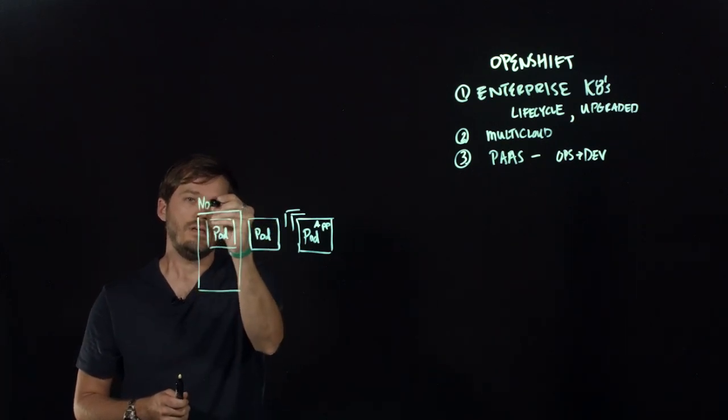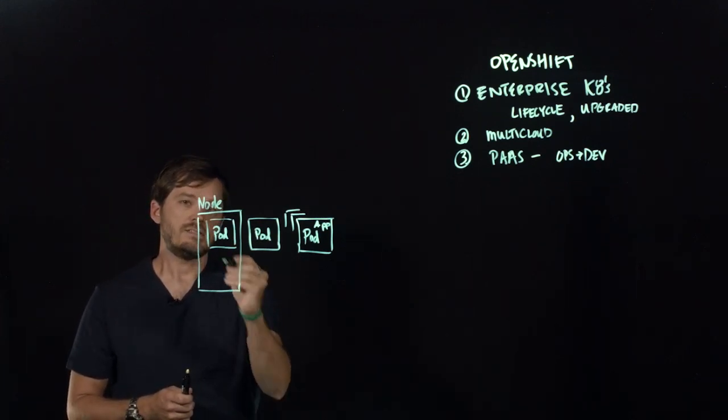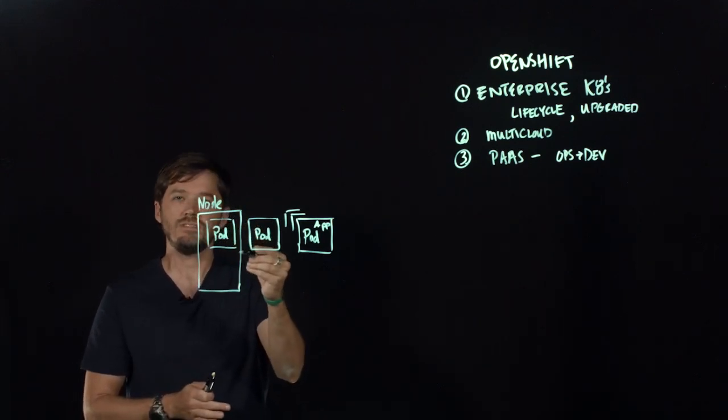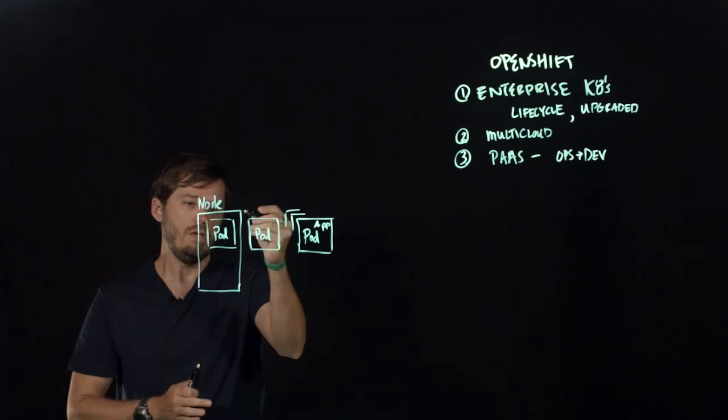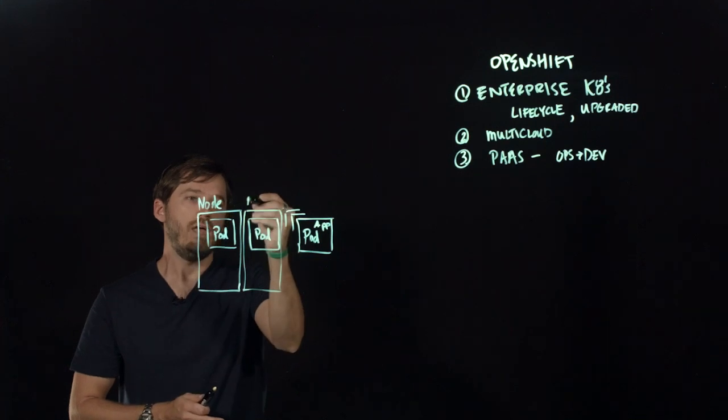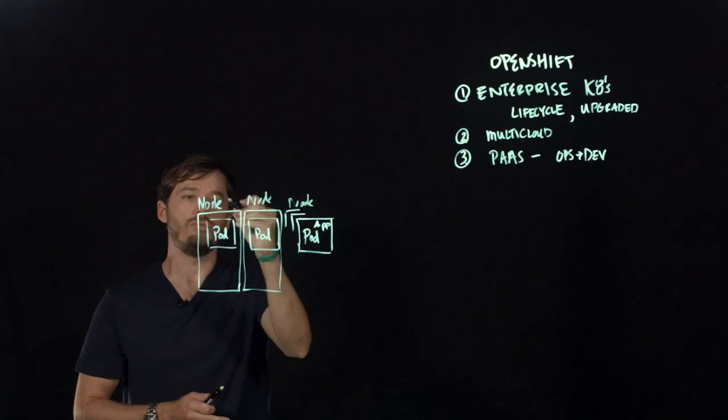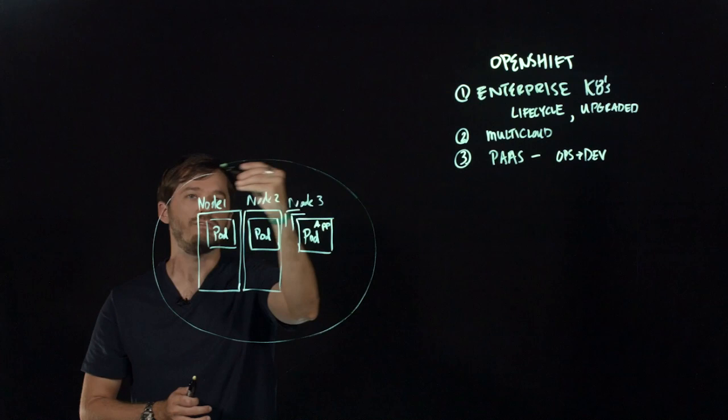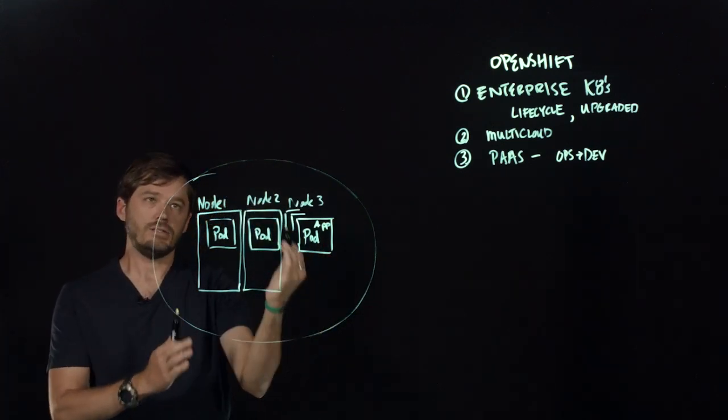A node is basically a container host. It is the workhorse, the basic operating system that allows multiple instances of these container runtimes and manages those locally on the system. So there will be many of these nodes, these worker nodes inside a managed cluster. Within all of this, so all of these nodes together, we will have the Kubernetes cluster itself.